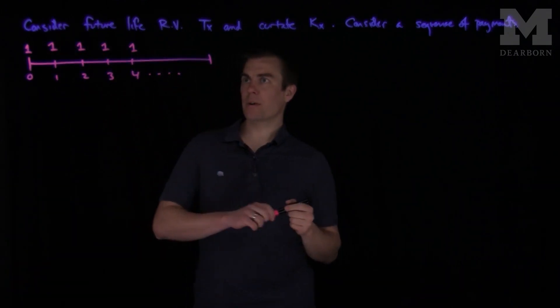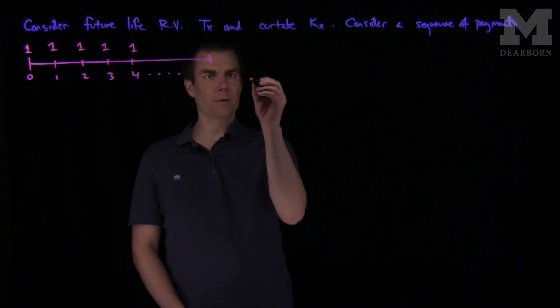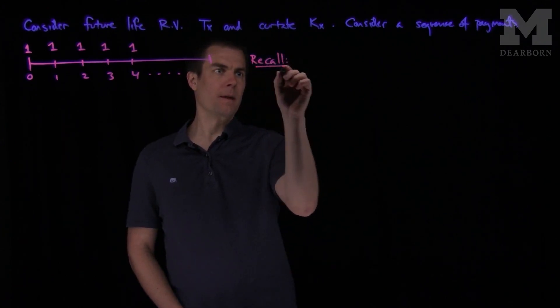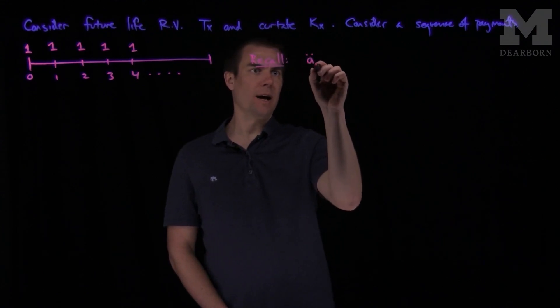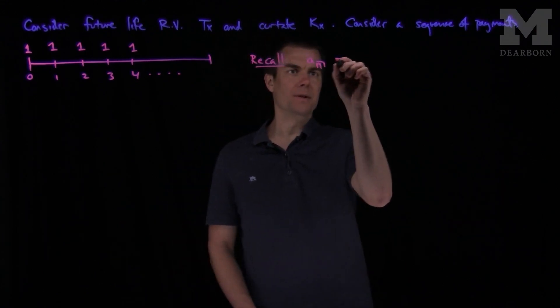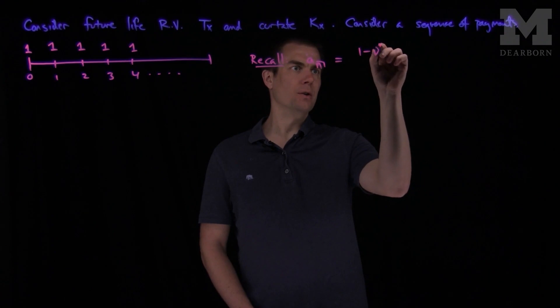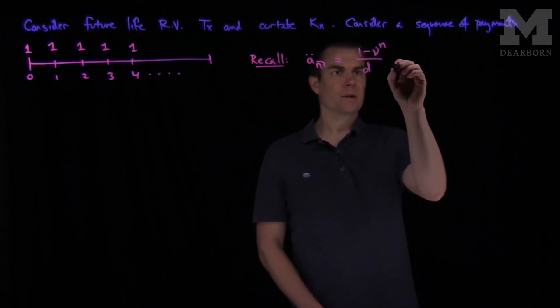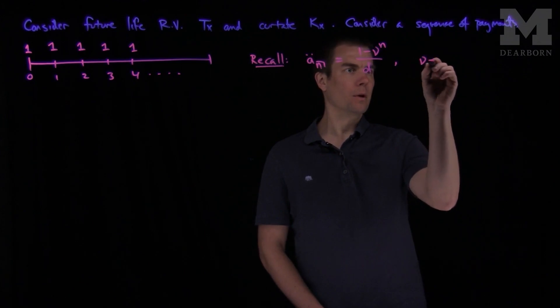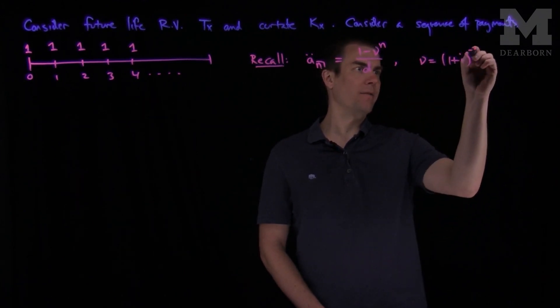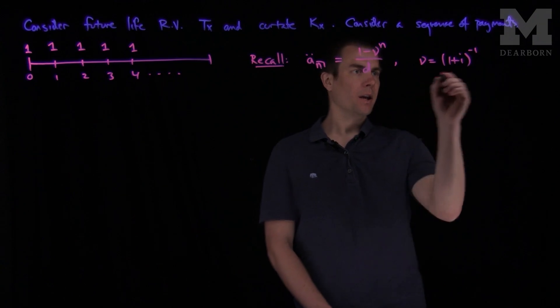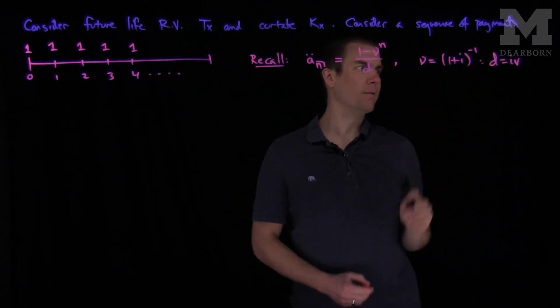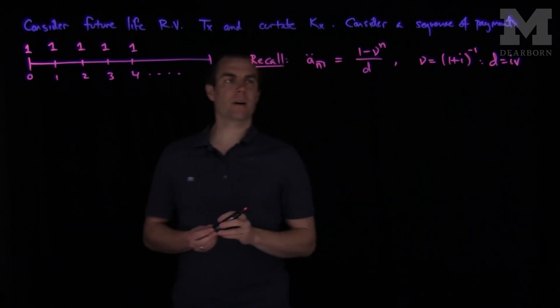And so to understand how this random variable works, we'll do the following. We'll recall that if we have a double dot n, what this is, is 1 minus nu to the n over d, where nu is the discount, where nu is 1 plus i, the effective annual rate of interest to the negative 1. And d is defined by d equals iv. That's our discount factor.